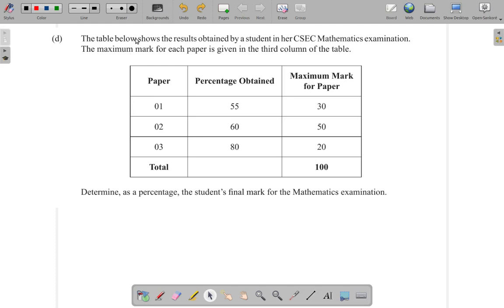The table shows the results obtained by a student in her CSEC Mathematics examination. The maximum mark for each paper is given in the third column of the table. You have paper 1, paper 2, paper 3. You have the percentage obtained and the maximum marks available. Determine, as a percentage, the student's final mark for the Mathematics examination.